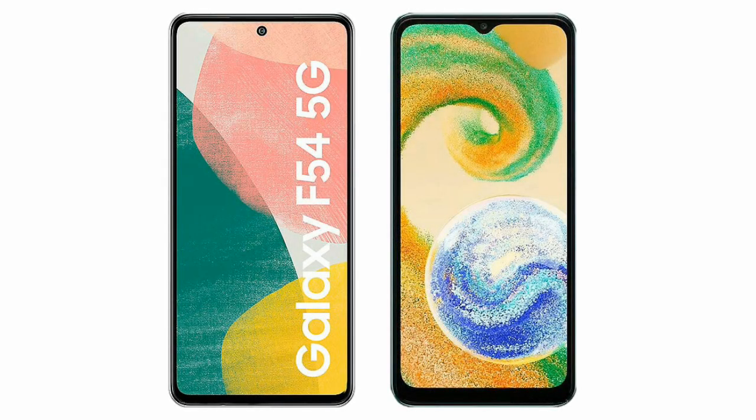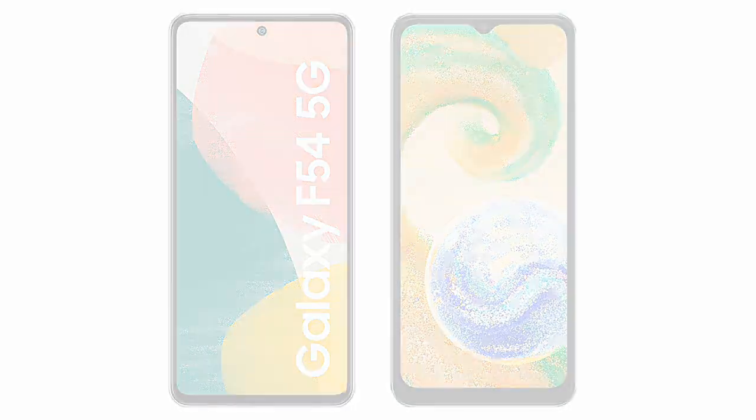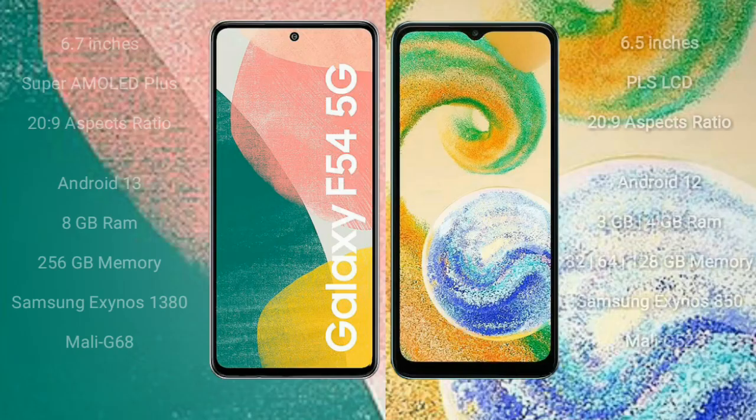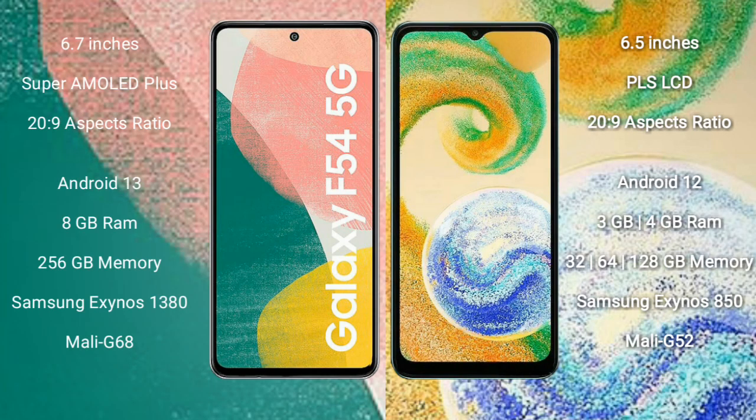I will compare the new Samsung Galaxy A54 with Samsung Galaxy A4s. Samsung Galaxy A54 comes with a 6.7 inches Super AMOLED Plus display and aspect ratio 20 to 9. Samsung Galaxy A4s comes with a 6.5 inches PLS LCD and aspect ratio 20 to 9.